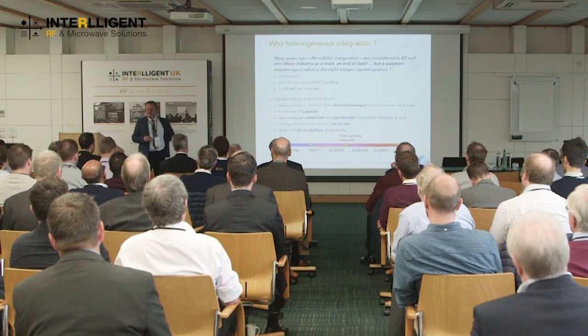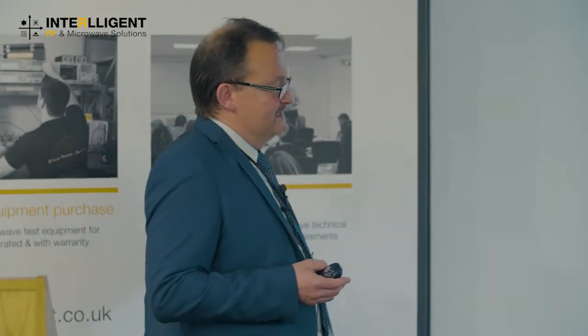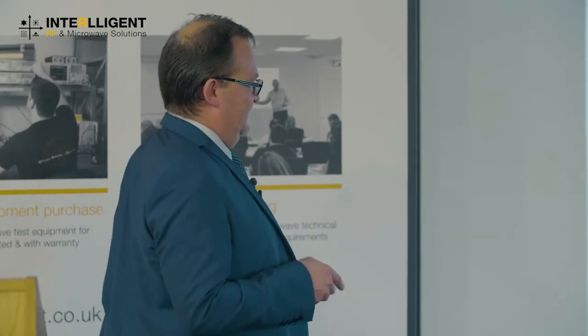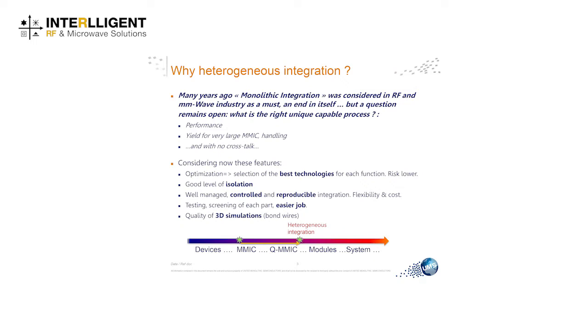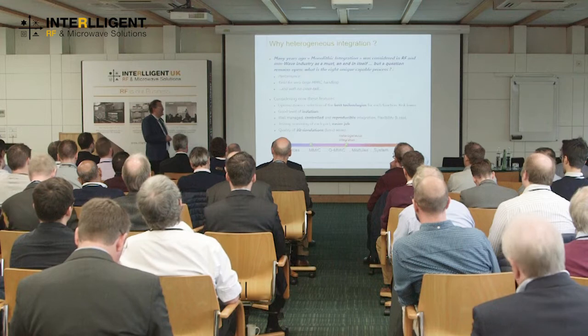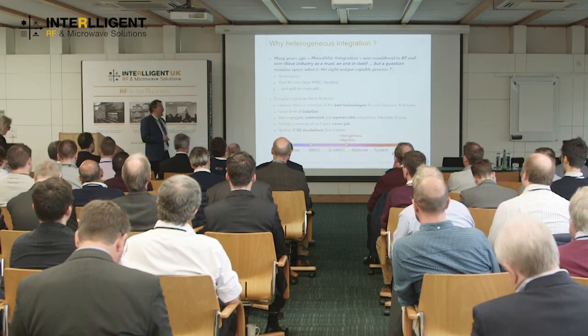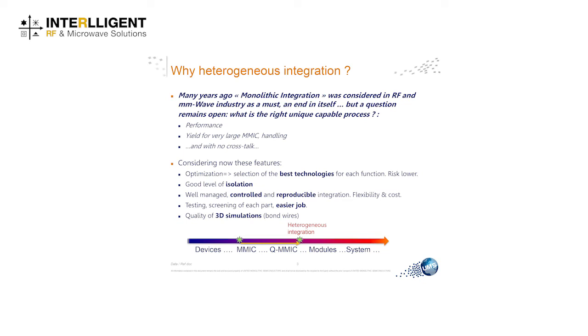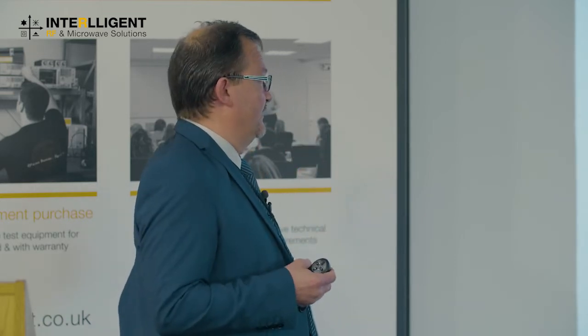We also decrease the risk, because when you have to design 10 to 12 different MMICs, somewhere it is less risky to develop 10 to 12 MMICs than only one MMIC which does everything, in terms of risk management. The level of isolation at the MMIC level is also very important, and it's sometimes more accurate from an isolation point of view to separate functions inside the package or module. Control of the bond bonding was improved more and more during the last years, and now we know it's possible to do reproducible and fully controlled integration.